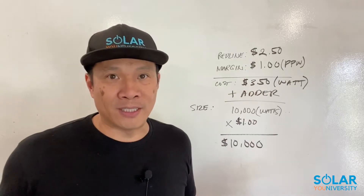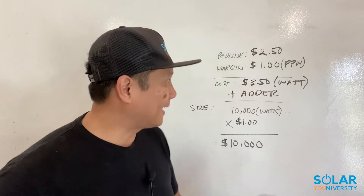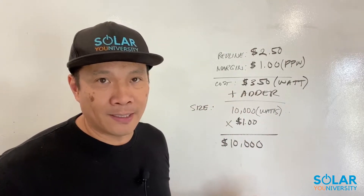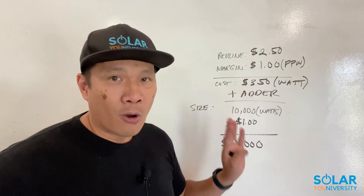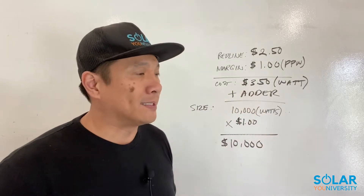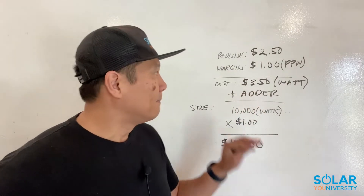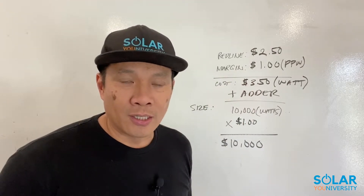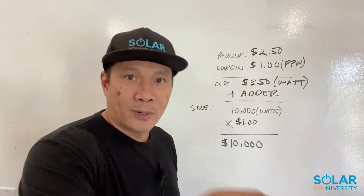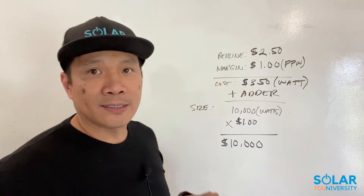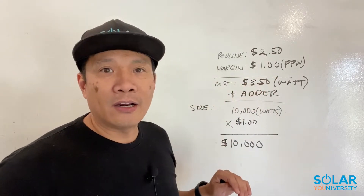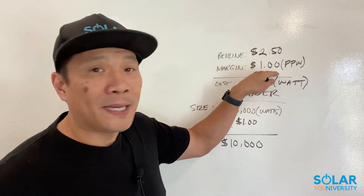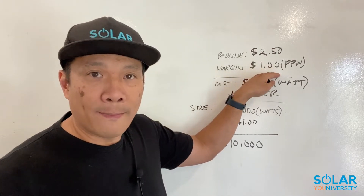Keep in mind this is for demonstrational purposes only. You may make this kind of money, you may make less. The biggest misconception is that adding an adder cuts into your commission — but as you can see, even with an adder, you calculate how much money you want to make based on your margin, regardless of whether there's an adder.